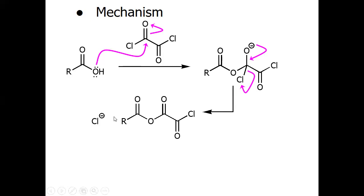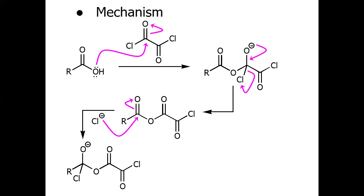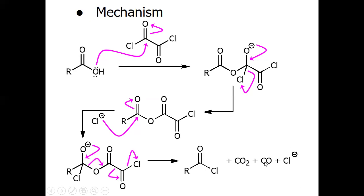The chloride ion acts as a base or nucleophile to attack at the carbon and gives another intermediate. Surprisingly, the oxygen lone pair collapses this whole group because the C=O moiety is a much better leaving group. It collapses to give one molecule of carbon dioxide and one molecule of carbon monoxide. The chloride ion captures the proton to give the acid as well. And here we have the acyl fluoride derivative.